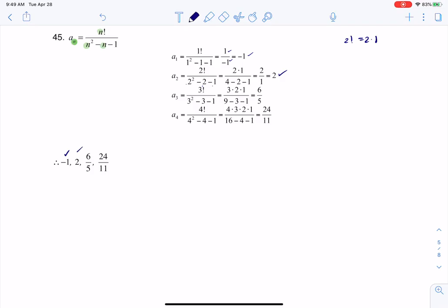All right, when we get to a sub 3, we've got a 3 factorial, 3 squared minus 3 minus 1. And now 3 factorial is 3 times 2 times 1, and then when we simplify that, we get fractions starting to show up. That's fine, 6 fifths.